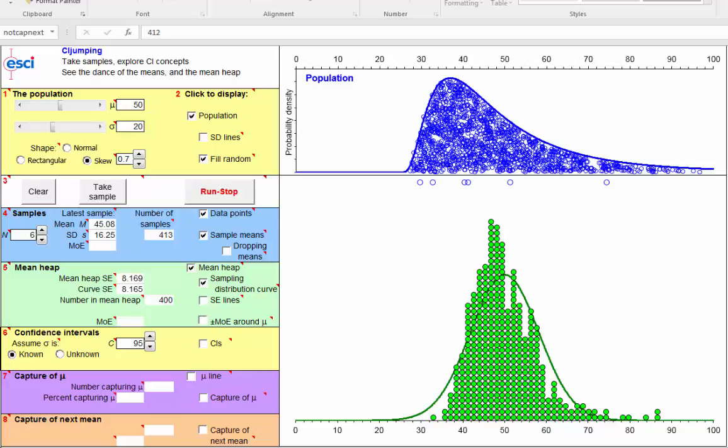Why do we care about the central limit theorem? There are two main reasons. The first is that our statistical model, really the critical point is that we assume usually that the sampling distribution of whatever statistic we're dealing with, say the sample mean, is approximately normal. And the central limit theorem tells us that even if out in the world the populations we're dealing with are not normal, then most likely the sampling distribution that we're really interested in will be at least approximately normal. So that is very reassuring for using the statistical model that we usually rely on.